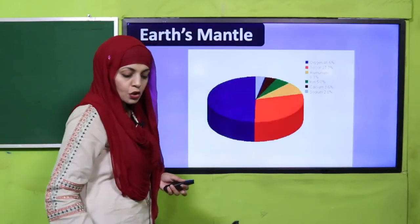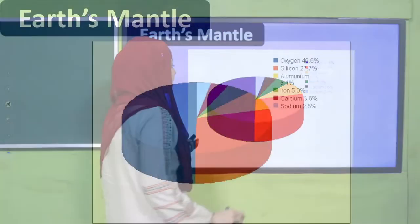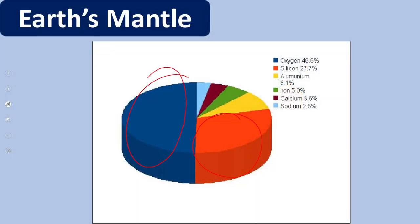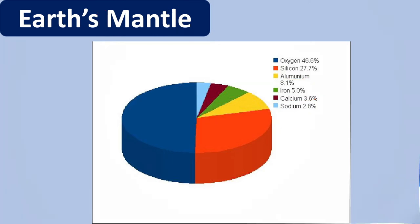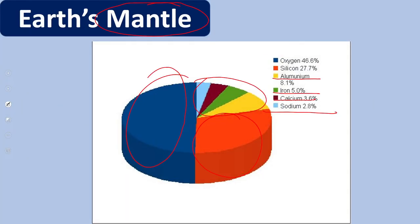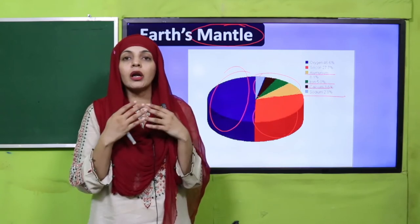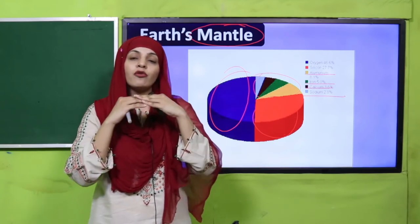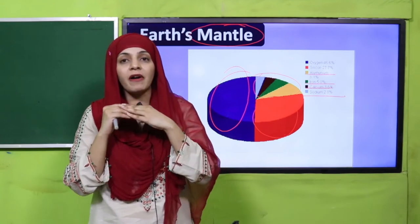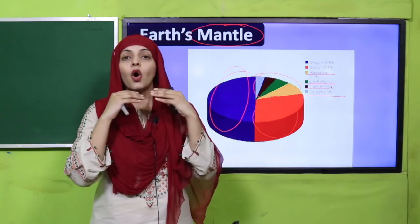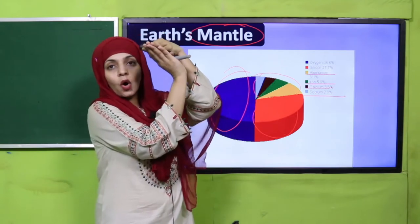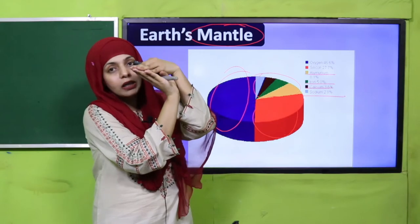Here is earth's mantle. Its composition includes oxygen, silicates, aluminium, iron, calcium, and sodium — ye in tamam chizhoon se milkar mantle bana hua hai. The mantle has two layers — inner mantle and outer mantle. The outer mantle is 70 to 475 km below earth's crust. And where the outer mantle and crust combine, that portion is called the lithosphere.